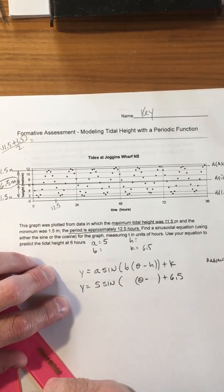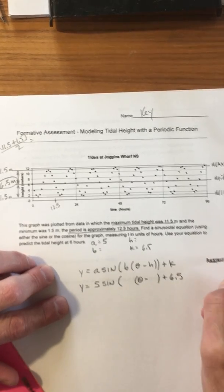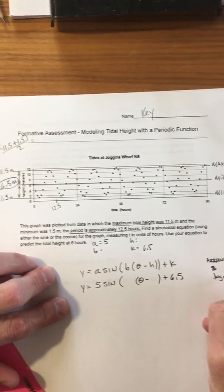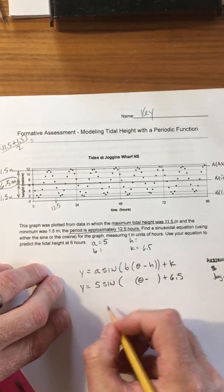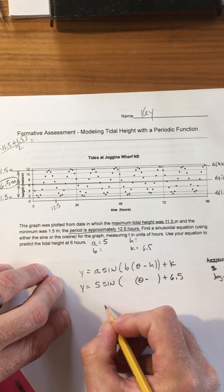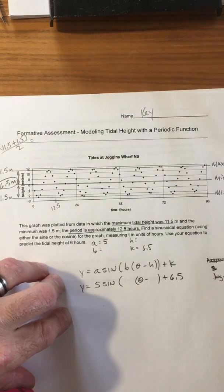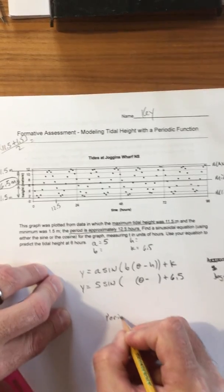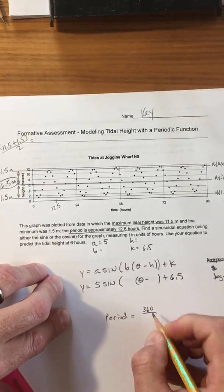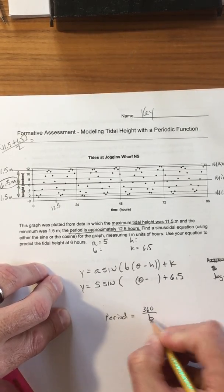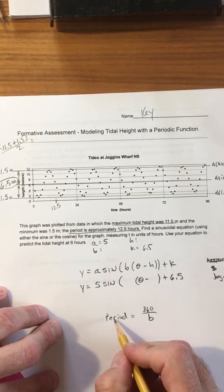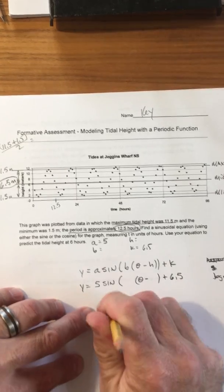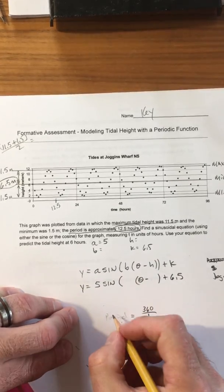And then let's see, you know we could do this in degrees if it's easier for you to do it in degrees. So what we would say is we know that the period is equal to 360 degrees divided by b. And up here it tells us the period is 12 and a half, so we can substitute 12 and a half.